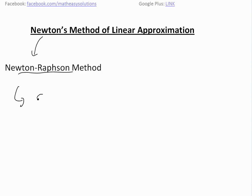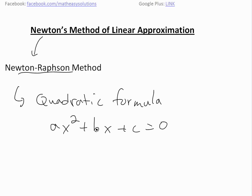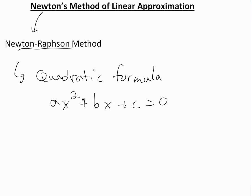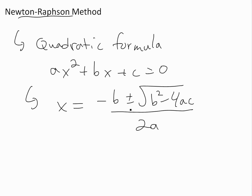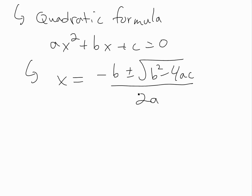So let's start off with the quadratic formula. This will help illustrate why we need Newton's method and what it is. So if you have a function like ax squared plus bx plus c equals zero, and we're going to find the roots — basically when this whole function is equal to zero — we just apply the quadratic formula: x equals negative b plus or minus square root of b squared minus 4ac, divided by 2a. You're probably used to this, but you can find a link to the proof below. So for this function, we have the formula for it.